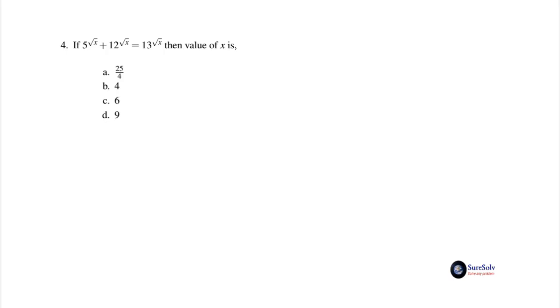This is an indices problem and we find no way to operate on the basis 5, 12 or 13 to get the solution deductively. But looking at the values, we remember that 5² + 12² = 25 + 144 = 169 = 13². So √x must be 2 to satisfy the given equation. So x will be equal to 4.